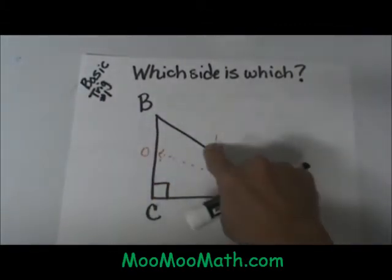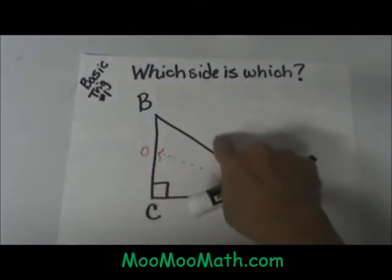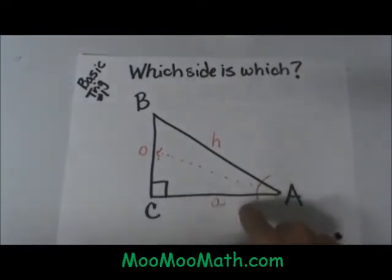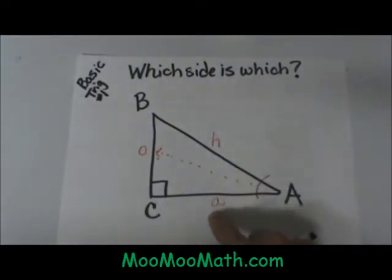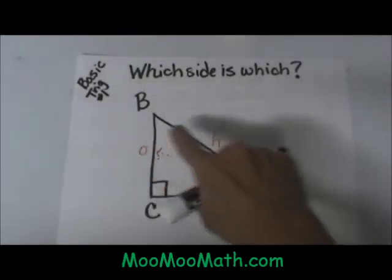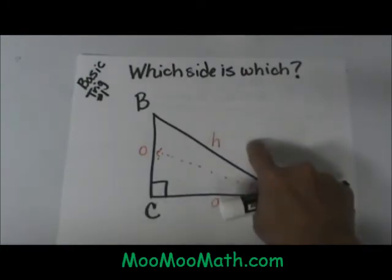The hypotenuse is always opposite the right angle so I label it next. And then the third side has to be the adjacent side and notice it is adjacent or next to angle A. So from angle A I have opposite, adjacent, and hypotenuse.